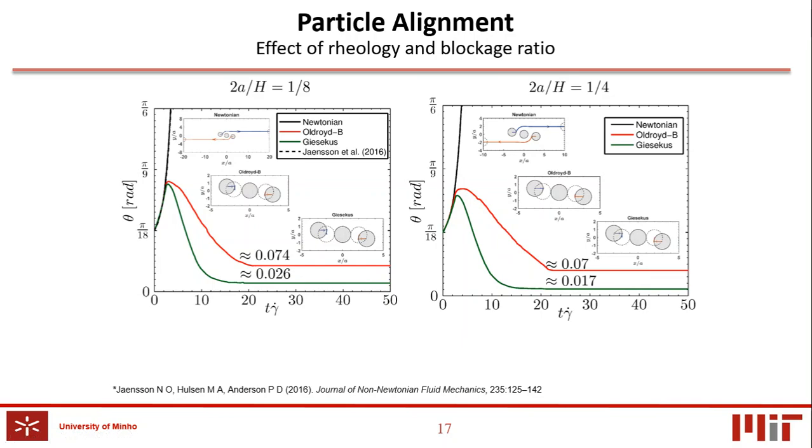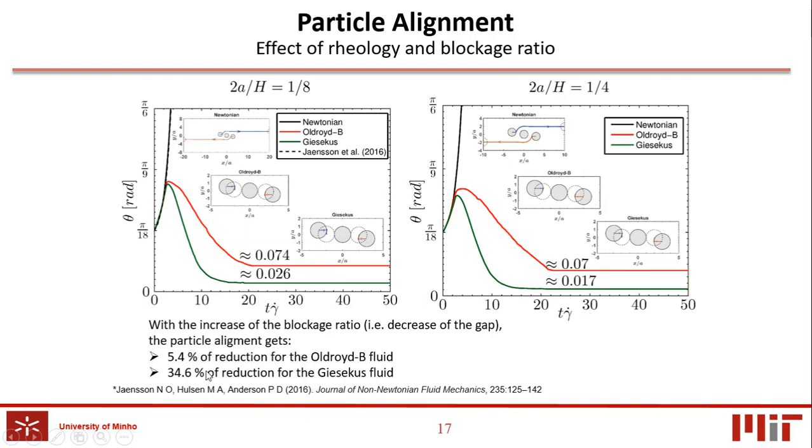Regarding the effect of the blockage ratio, we can conclude that increasing the blockage ratio, the particle alignment is enhanced, being 5.4% for the Oldroyd-B fluids, the red lines, and 44.6% for the Giesekus fluids, the green lines.